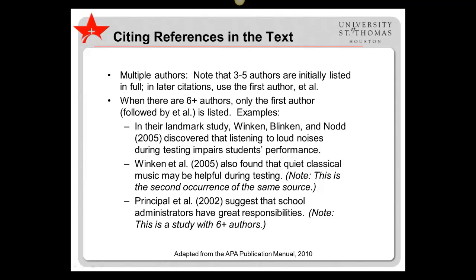Multiple authors: three to five authors are initially listed in full. In later citations, use the first author with et al. Be sure to put a period after the "al" in et al, as "al" is an abbreviation. When there are six or more authors, only the first author followed by et al. is listed.